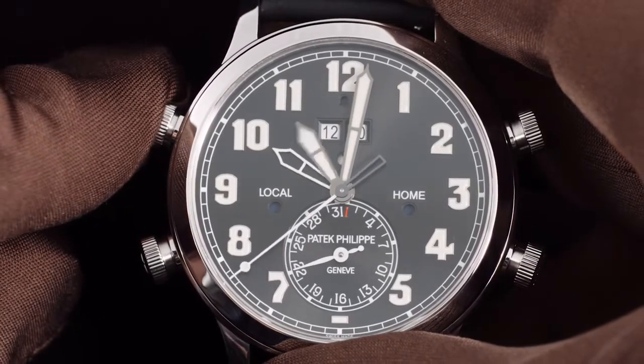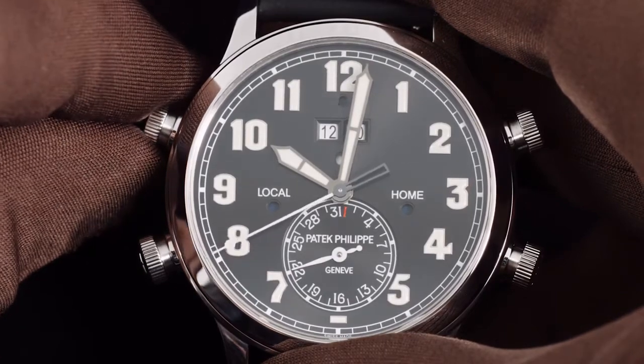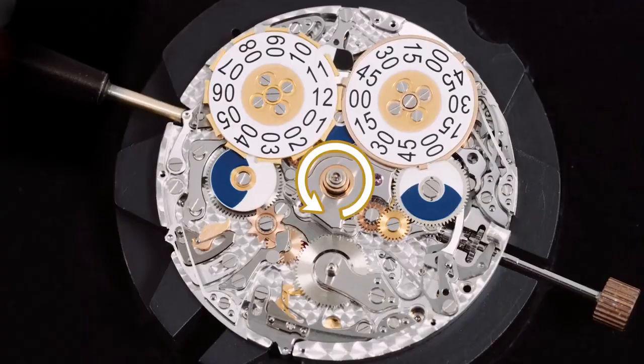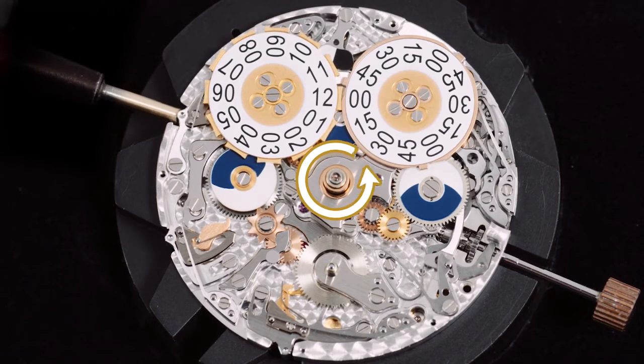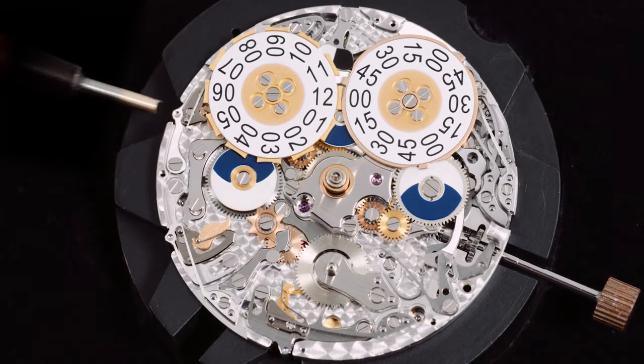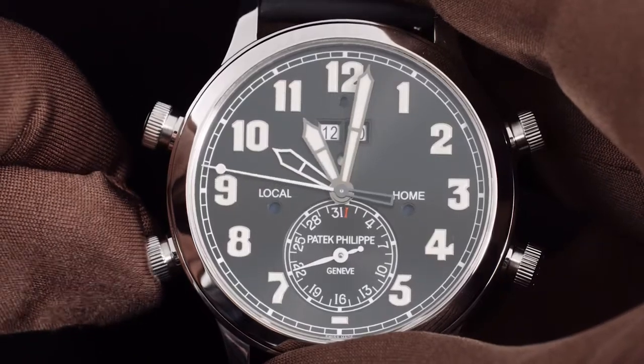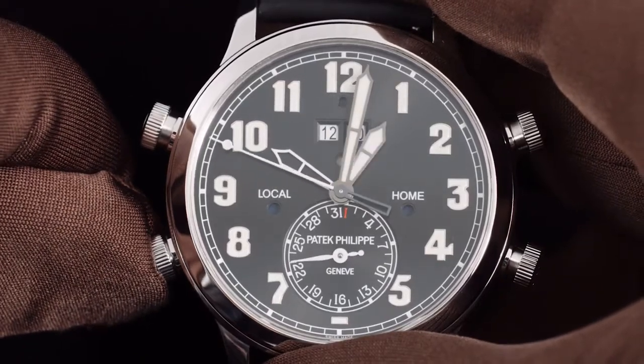Pressing the minus button engages a pawl with a date indicator wheel and via a series of intermediate wheels retards the local hour hand by exactly one hour. Pressing the plus button advances the local hour hand exactly one hour.